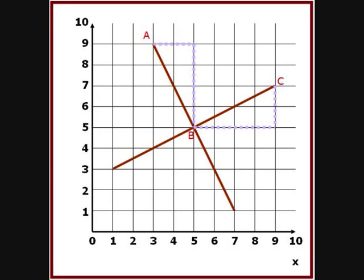The line AB is at right angles to BC. To get from A to B, we move right 2 and down 4. To get from B to C, we move right 4 and up 2.